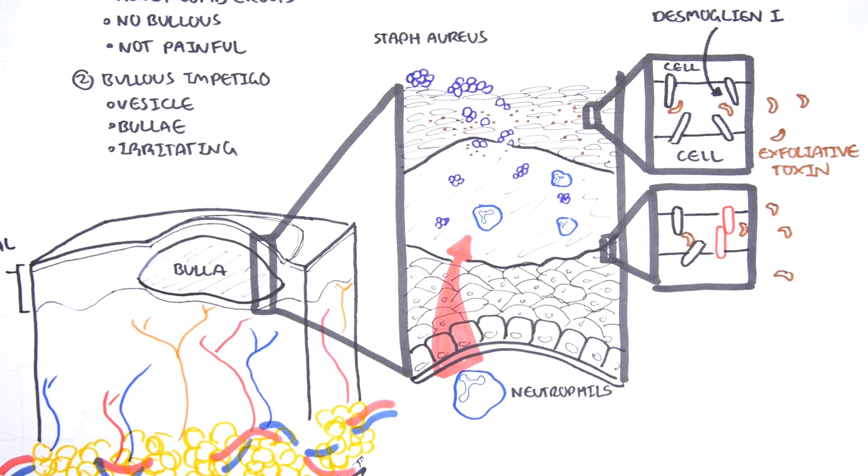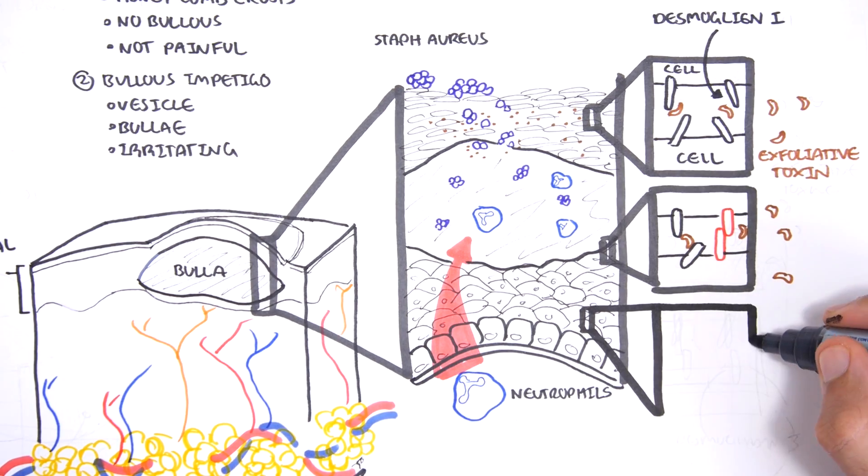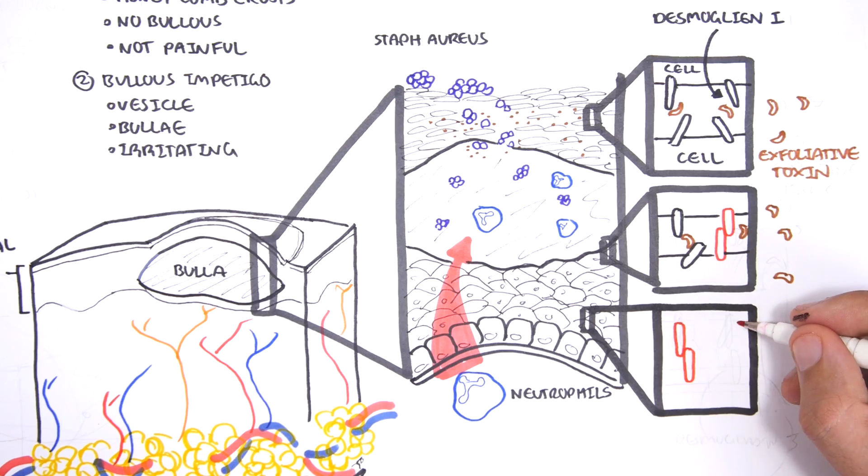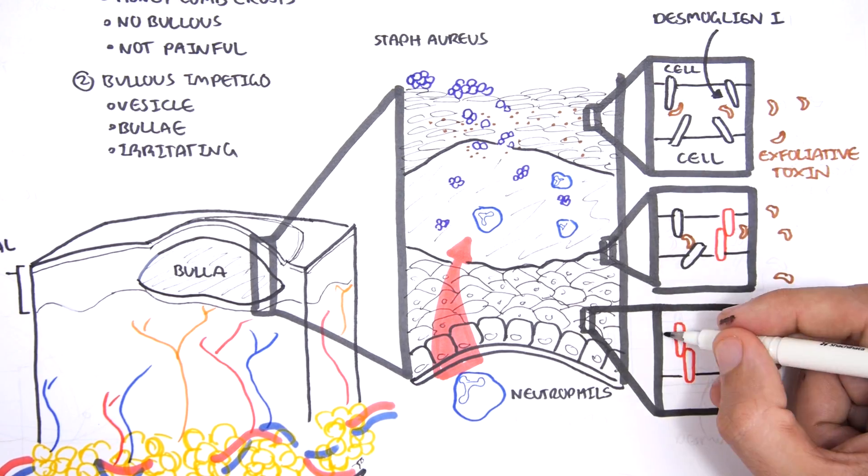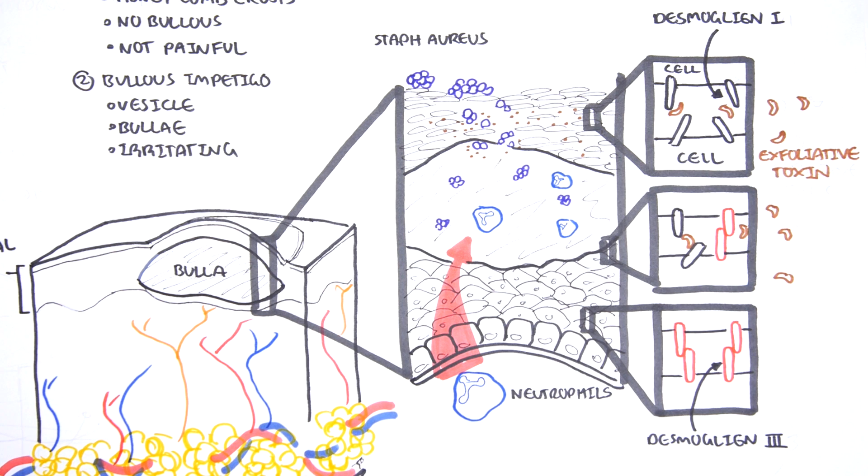However, the adhesion protein, the desmosome here in red, is not disrupted. This is because you have another type of desmosome found in the skin. This is not disrupted by the exfoliative toxins secreted by Staphylococcus aureus. This desmosome in red is actually found in the bottom parts of the epidermis, such as the stratum basale. This desmosome is called desmoglein 3. This is one of the reasons why impetigo doesn't involve past the epidermal area.